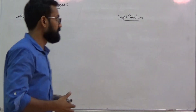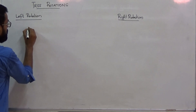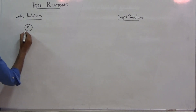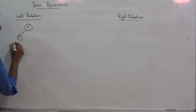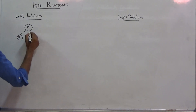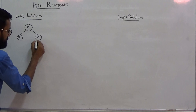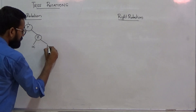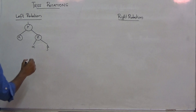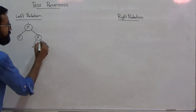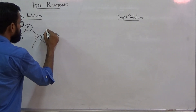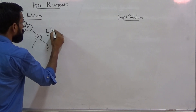Let us explain it with an example. Consider a sub-tree rooted at y. This sub-tree is rooted at y, having a left sub-tree rooted at x, a right sub-tree rooted at z, and z is having a left sub-tree (alpha) and a right sub-tree (beta). We are going to perform a left rotation with respect to node y.